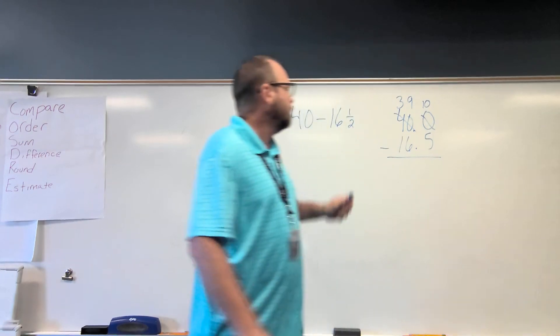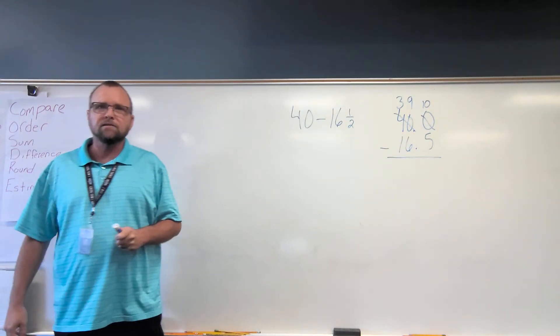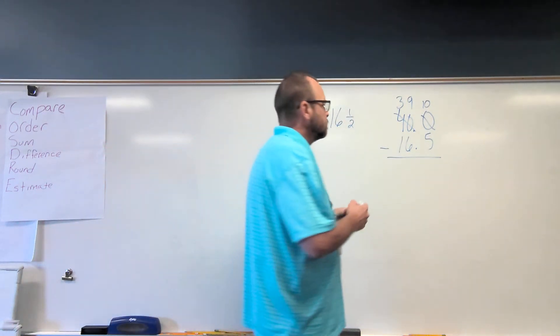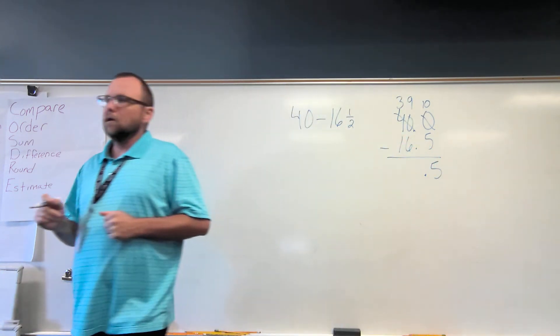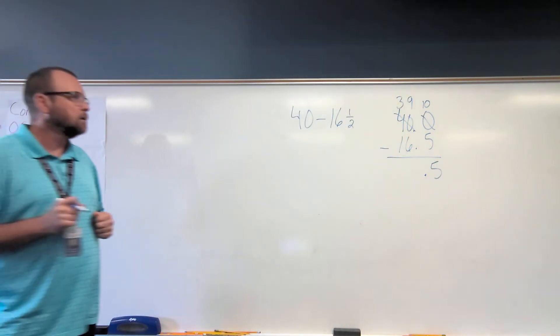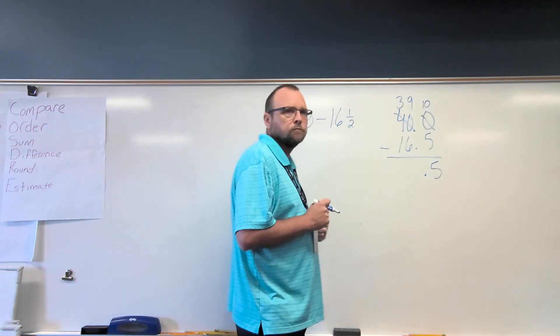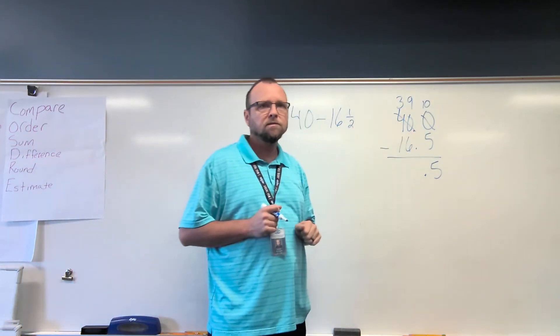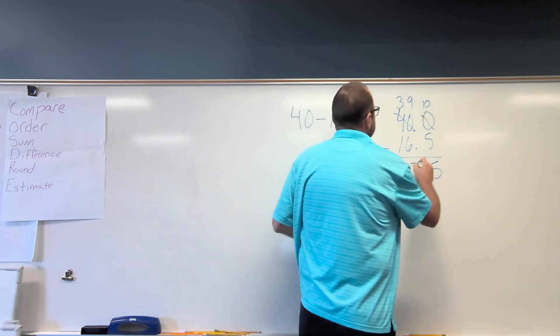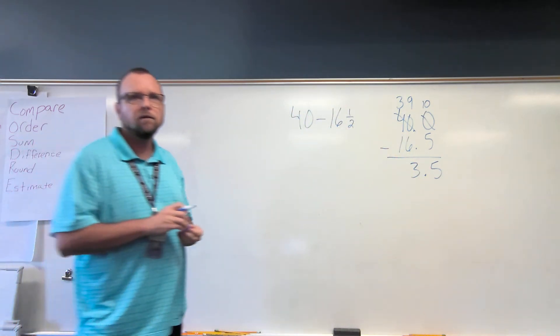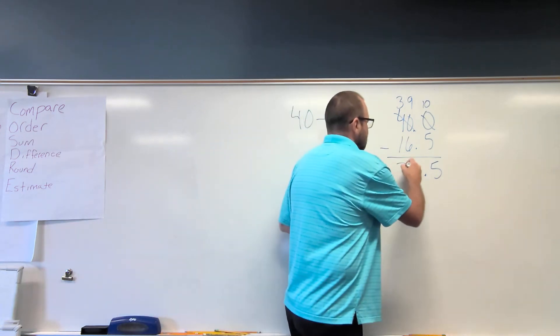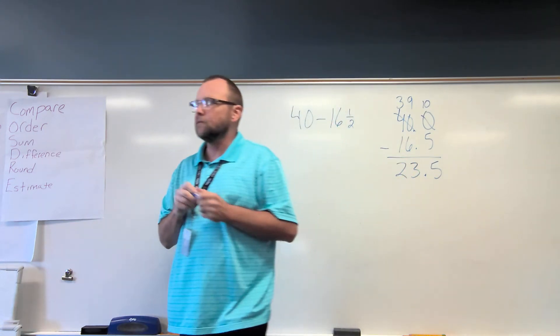Brantley, 10 subtract 5 is... It's 5. So we have 5 tenths. 9 ones subtract 6 ones, Brantley. 3, 1. 3, 10 subtract 1. 2. The correct answer would be 23 and 5 tenths inches.